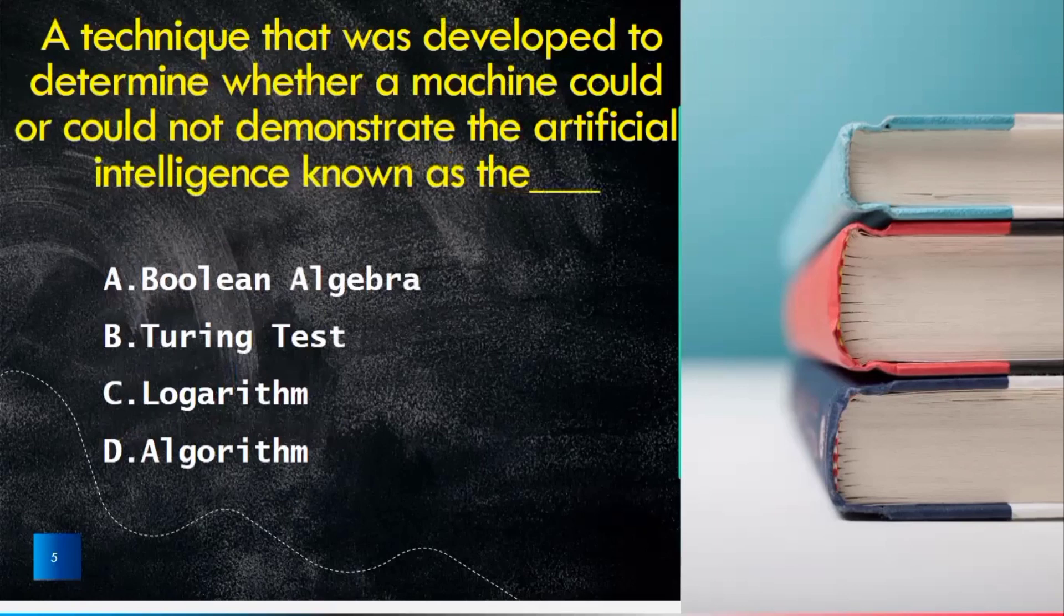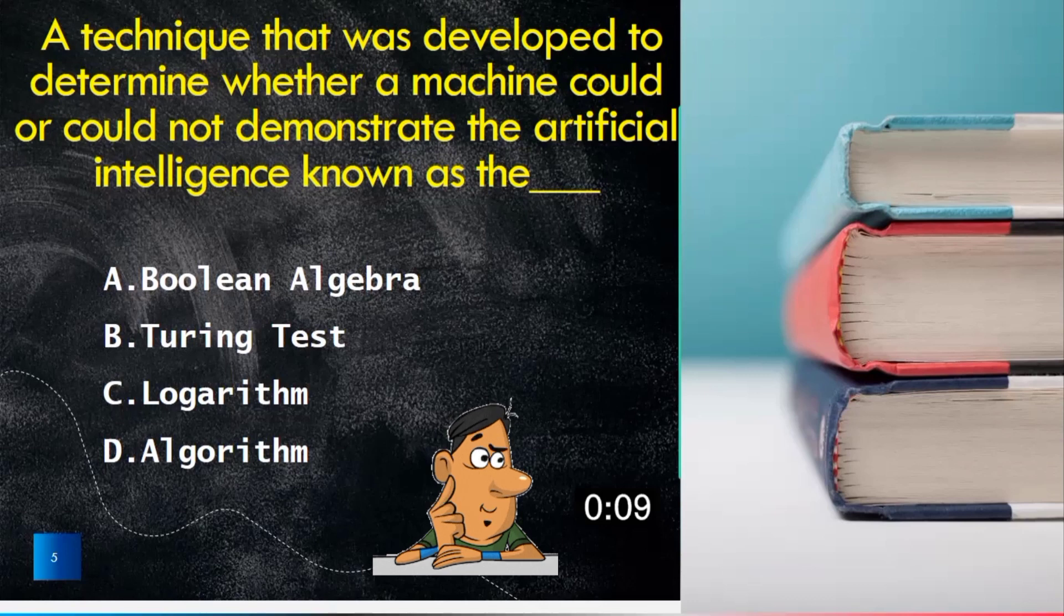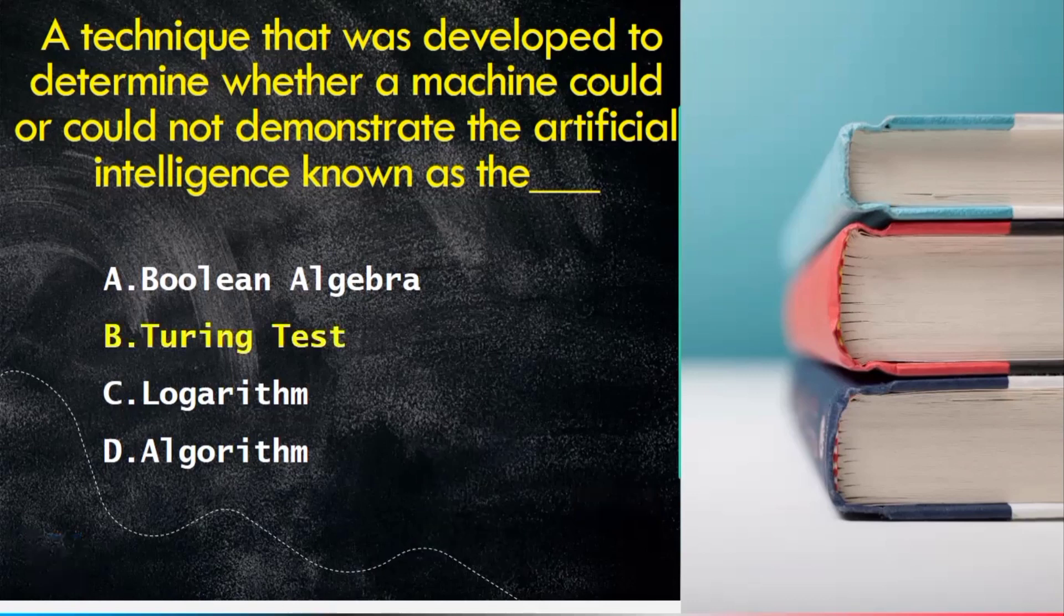A technique that was developed to determine whether a machine could or could not demonstrate the artificial intelligence known as the Boolean algebra, Turing test, logarithm or algorithm. The true answer is Turing test.